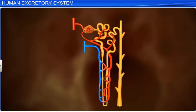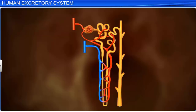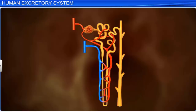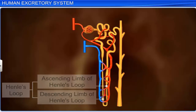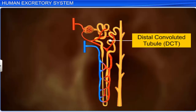The Bowman's capsule opens into the proximal convoluted tubule, a highly coiled structure, and is followed by a hairpin-shaped loop called Henle's loop. Henle's loop has a descending limb and an ascending limb. The ascending limb opens into the distal convoluted tubule, which is also a highly coiled tubular structure.